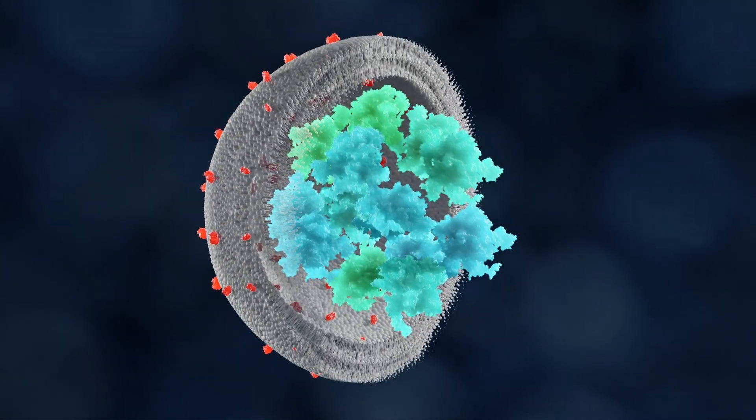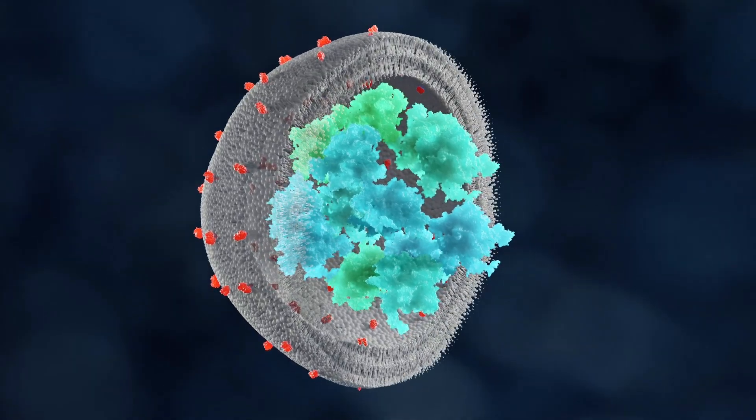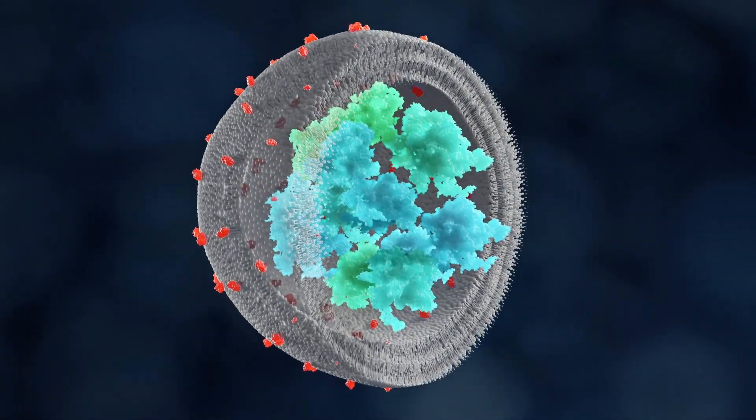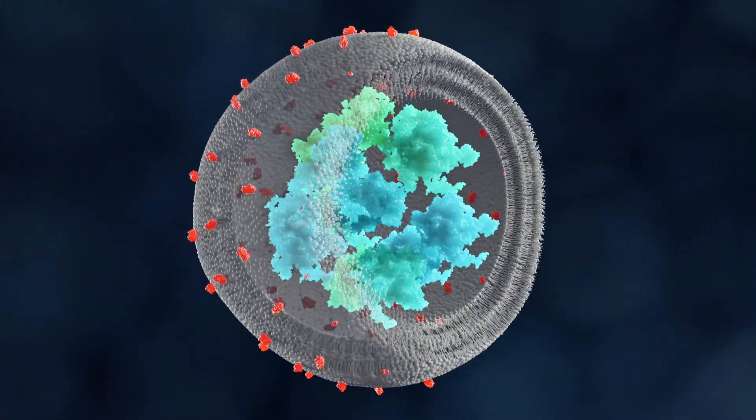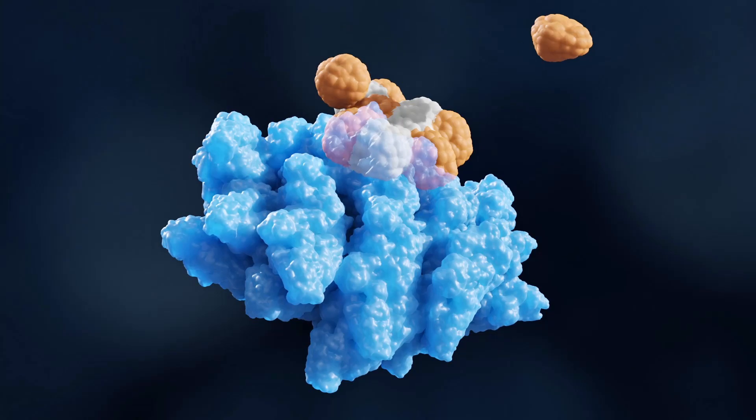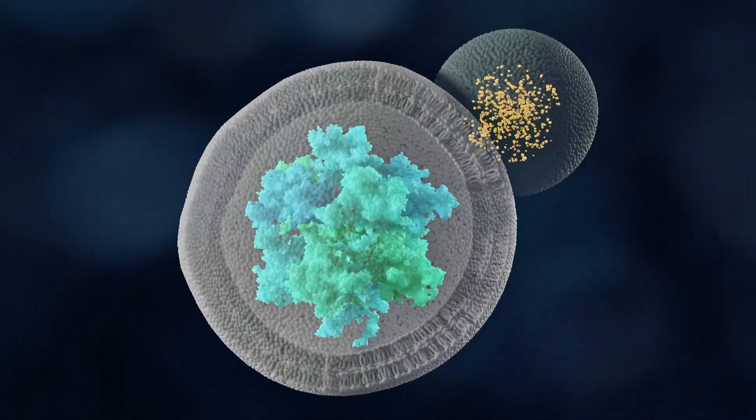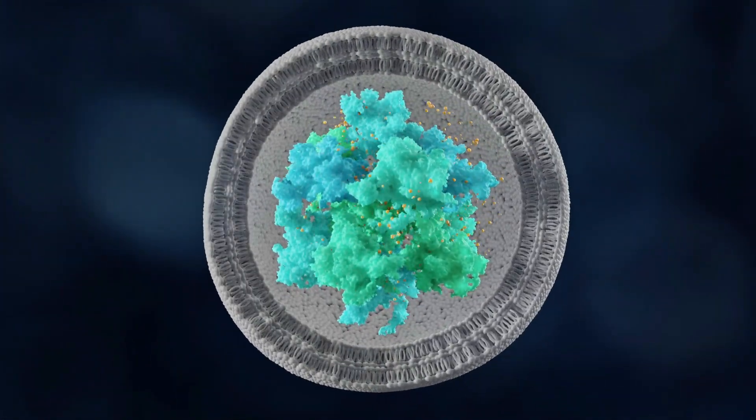Autophagosome biogenesis and consumption can be divided into five discrete and consecutive steps, each one involving specific sets of core ATG proteins, but also other factors: initiation, expansion, maturation, tethering and fusion, and breakdown and recycling.